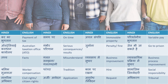Achal sampatti means immovable property — it's also called real estate. But if you are not comfortable or don't remember 'real estate' at that time, you can also say immovable property. Chal means movable, achal means immovable. So if you break down the words and understand them, you can translate more easily and quickly.